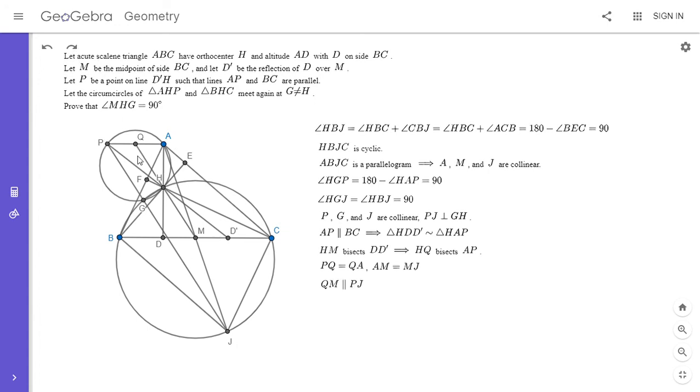QM is parallel to PJ, but we know that PJ is perpendicular to GH, so that means QM has to be perpendicular to GH. Since PJ is perpendicular to GH and QM is parallel to it, it also has to be perpendicular to GH. Another way of saying that is that angle MHG has to be 90 degrees, and that solves the problem.